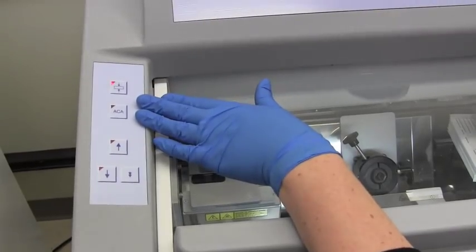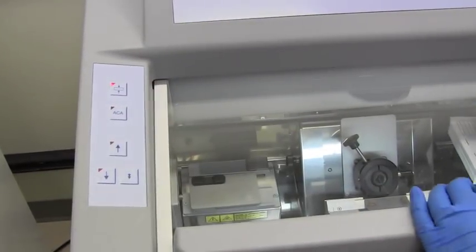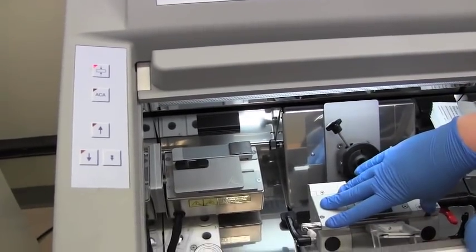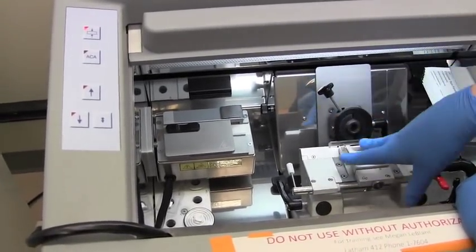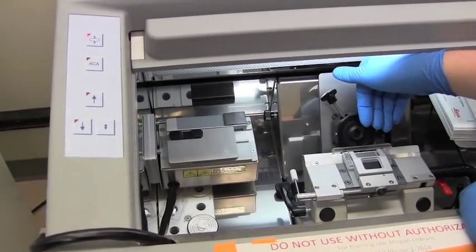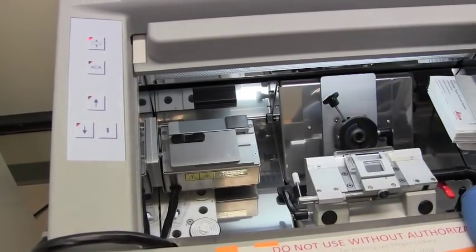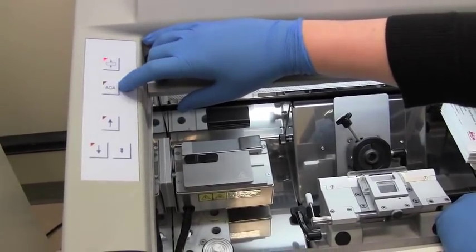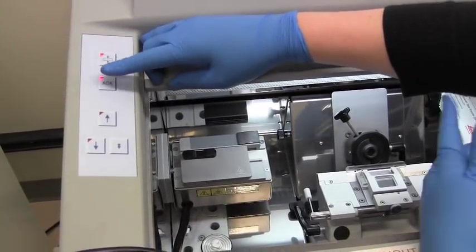The buttons on the side here control the carriage moving forward and backward. So this is what's going to move forward. The actual blade holder isn't going to move. This is what's going to move towards the blade every single time you cut. So you can advance it manually using this automatic advance button. If you push it, it'll automatically approach.